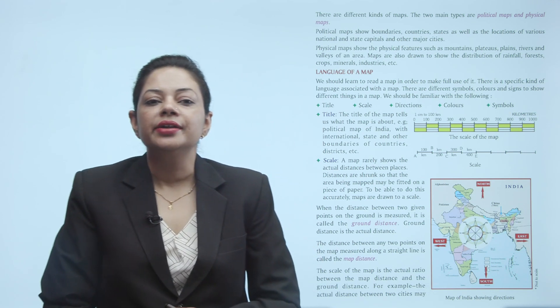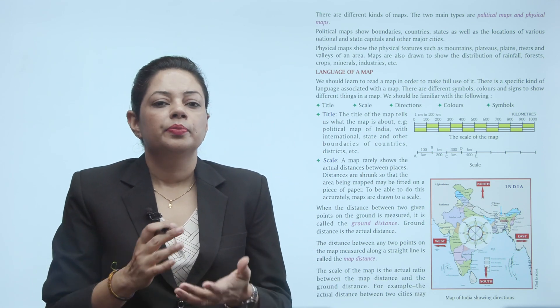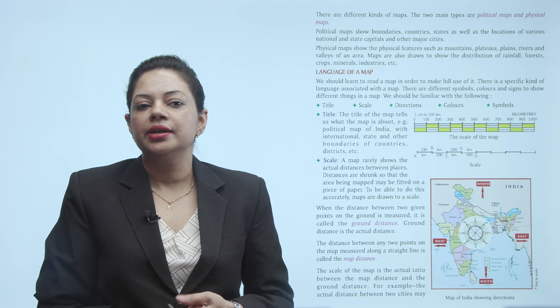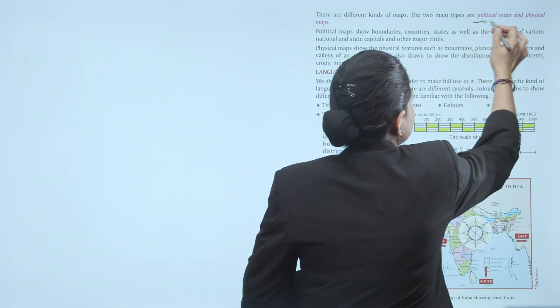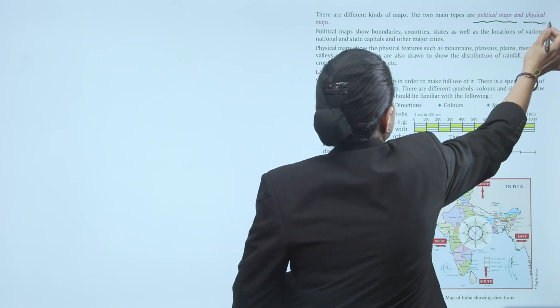There are different kinds of maps. Two main types of maps which we are going to study are: first is the political map, and second is the physical map.